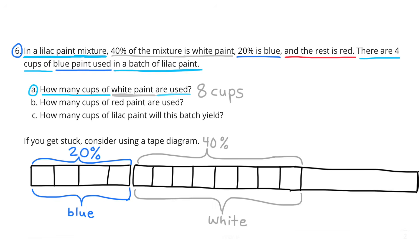Number 6. In a lilac paint mixture, 40% of the mixture is white paint. 20% is blue and the rest is red. There are 4 cups of blue paint used in a batch of lilac paint. How many cups of white paint are used? Well, they tell me that blue paint represents 20% of the mixture and that there's 4 cups of blue paint. So if you double 20%, you get 40%. And that's the percentage for the white mixture. So we'd also have to double the 4 cups. If we double 4 cups, we would get 8 cups. So 8 cups of white paint would be 40% of the mixture. There are 8 cups of white paint used.